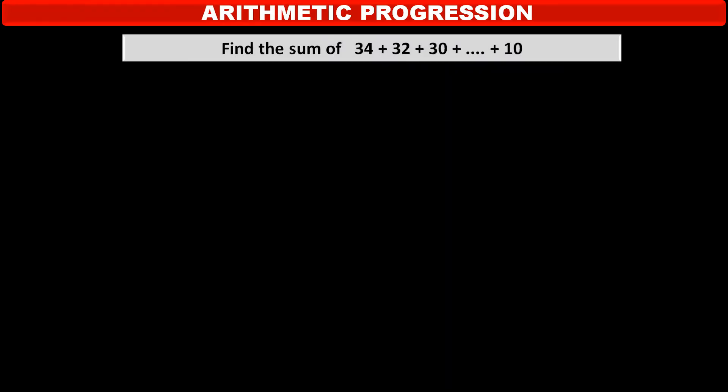Now, we have to find the sum of 34 plus 32 plus 30 plus dot dot dot up to plus 10. See, solution. From the given information, we can write the given AP as 34, 32, 30, dot dot dot up to 10.